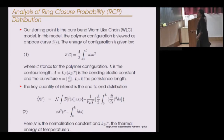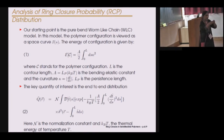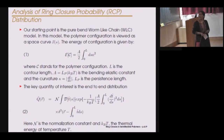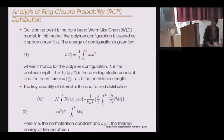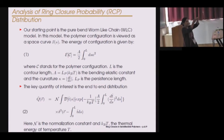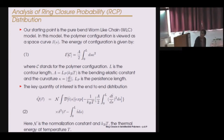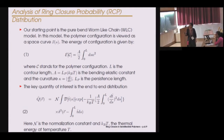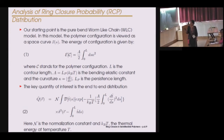In this model, the polymer configuration is viewed as a space curve, and the energy of the configuration is given by an expression where t stands for the polymer configuration, L is the contour length, and a, which is proportional to the persistence length — the length scale over which the polymer is essentially straight. The curvature kappa measures the rate of change of the tangent direction with the arc length.